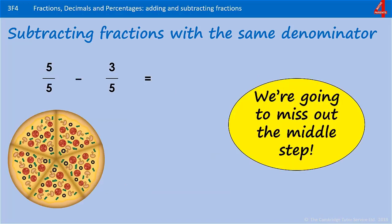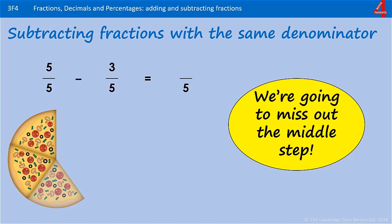We are going to do the same but miss out that middle step and go straight into how many fifths we have left. 5 fifths take away 3 fifths. Remember that your denominator will be fifths, and the numerator: 5 take away 3 leaves you with 2 fifths.